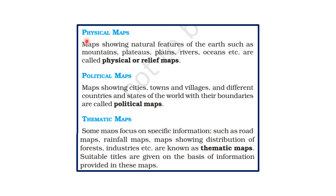Maps are of three types: physical maps, political maps, and thematic maps. Physical maps are those which show natural features of the earth like mountains, plateaus, plains, rivers, oceans, etc. So the maps showing natural features of the earth are called physical maps or relief maps.